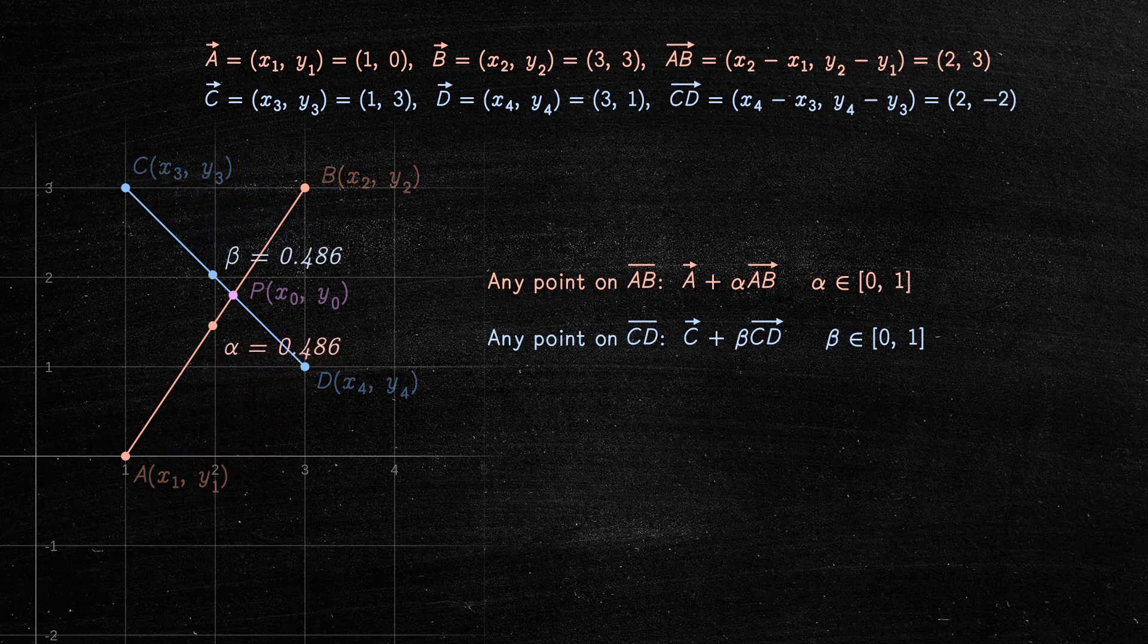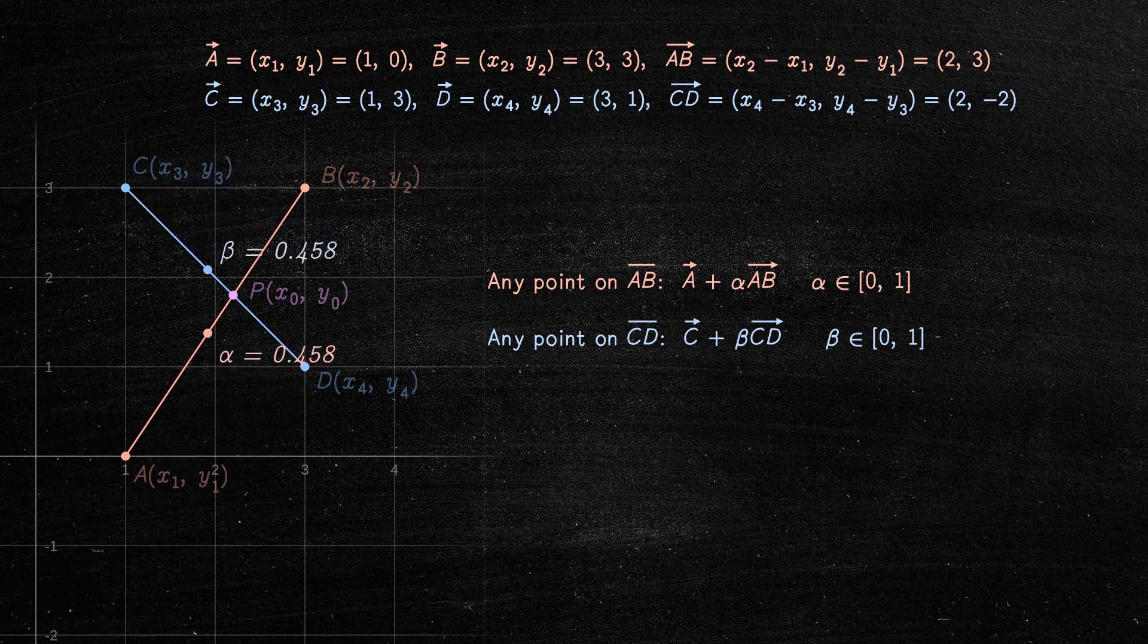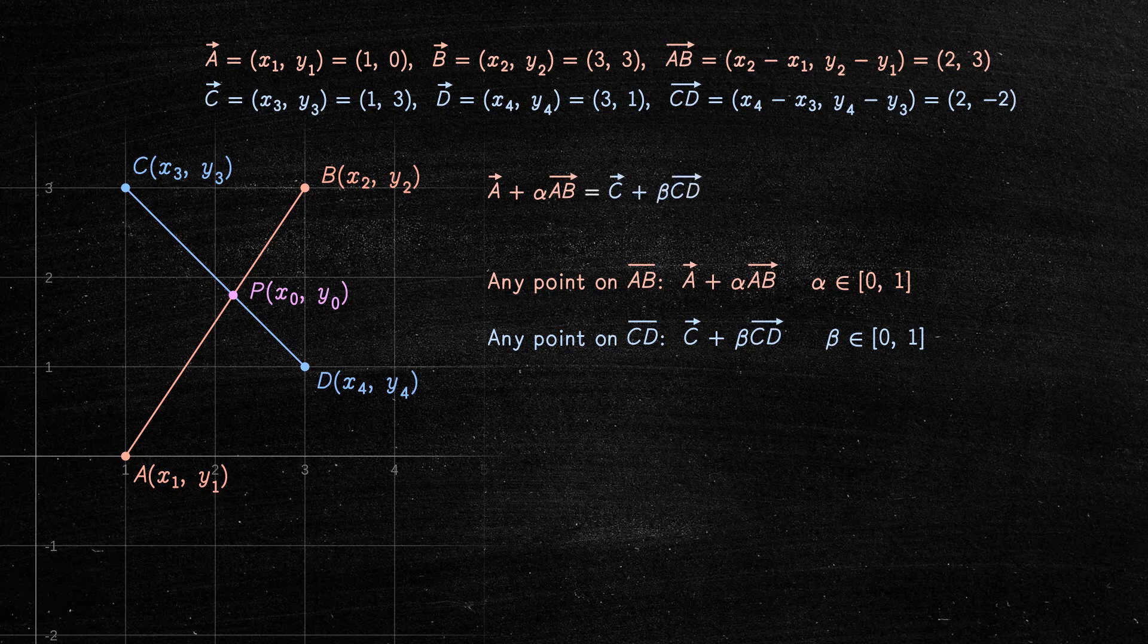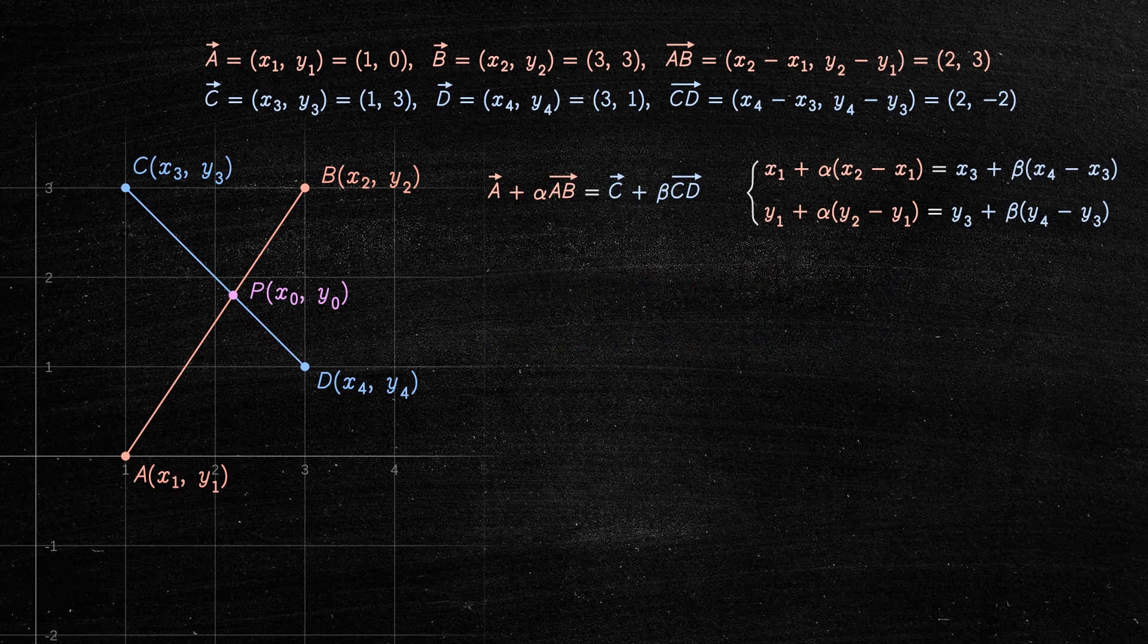Now, as you can imagine, the idea is to find the values of alpha and beta that match the same point on both expressions, as follows. We can rewrite this equation like a system of two equations. Now we solve for alpha and beta, giving us the following.